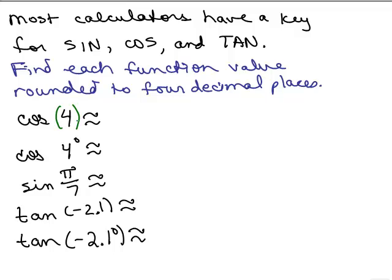You could put a parenthesis around that 4, but it's not necessary if it's just a single number like this. So the cosine of 4 rounded, my calculator gives me negative 0.6536.